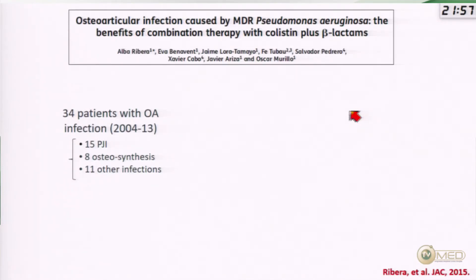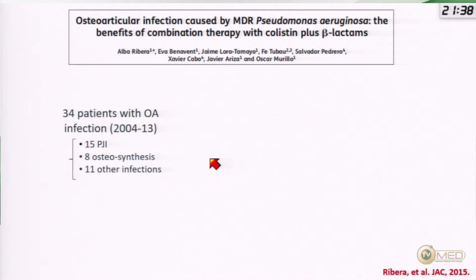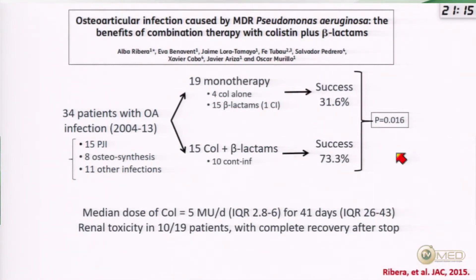We have limited but meaningful clinical experience. A retrospective study from Barcelona included 34 patients with bone and joint infections — many with prosthetic or hardware-related infection by Pseudomonas aeruginosa. Over 10 years, patients were treated with colistin monotherapy, beta-lactam monotherapy, or in the later period with colistin plus beta-lactam administered as continuous infusion to optimize PK/PD. The combination therapy showed a success rate of around 73%, versus only 32% for monotherapies — a significant difference. These results are comparable to those of ciprofloxacin, suggesting this could be a viable alternative. Renal toxicity occurred but resolved upon antibiotic withdrawal.